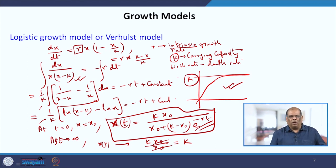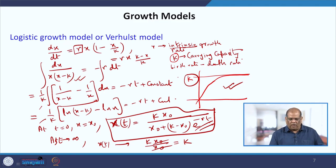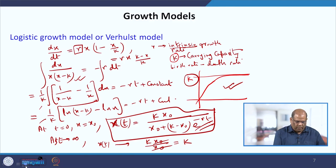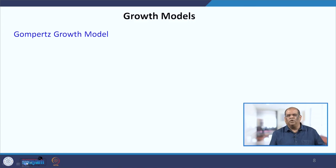This is the logistic growth model. In most modelling where we involve growth, we use the logistic growth, which is more realistic than the constant growth rate. We have a second function which also represents growth, and that is called the Gompertz growth model, or Gompertzian growth.